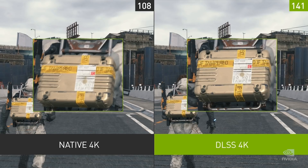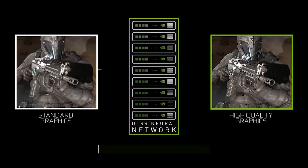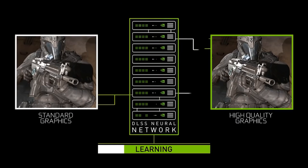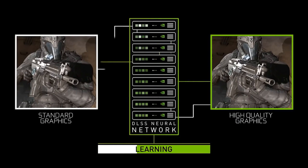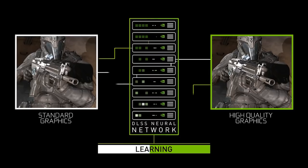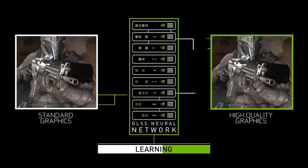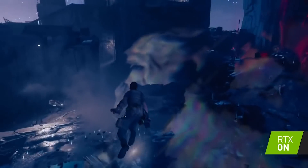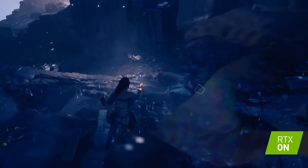let's say 1080p, and then upsamples it to a higher resolution output. This is tremendous for games, because if you're trying to render internally at 1080p, it's considerably fewer pixels — much less work for the GPU — than trying to render at 1440p.